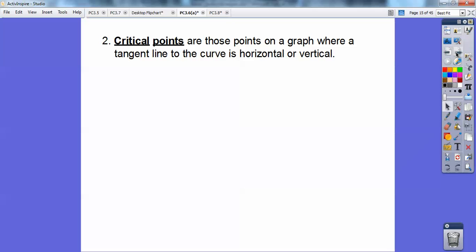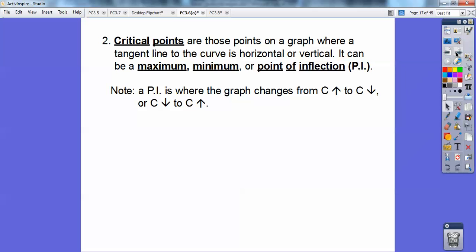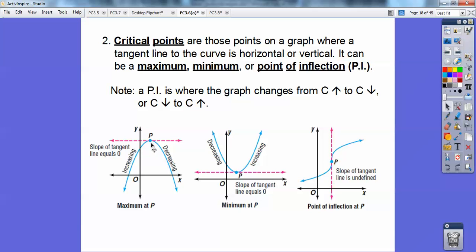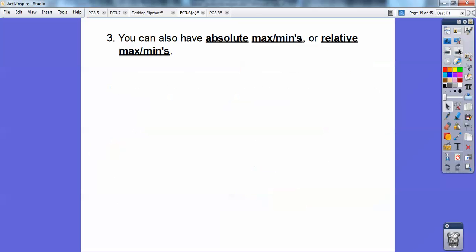Critical points are those points on a graph where a tangent line to the curve is horizontal or vertical. It can be a maximum, your critical can be where a maximum is or a minimum is, or it could be where a point of inflection is. A point of inflection is where your graph changes from concave up to concave down, or when it changes from concave down to concave up. This is increasing no matter what, so it's going to be a point of inflection right there. Or if it's decreasing no matter what, it's a point of inflection.